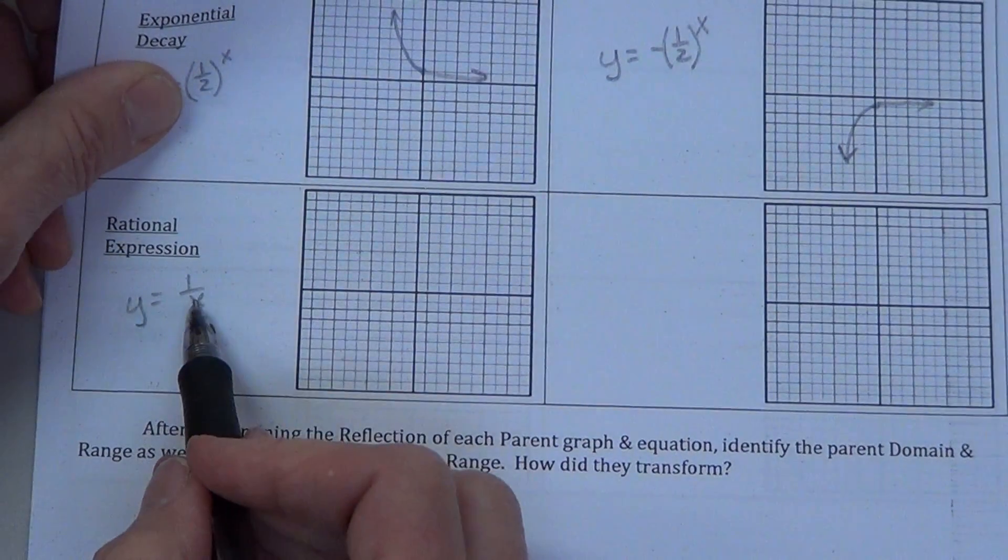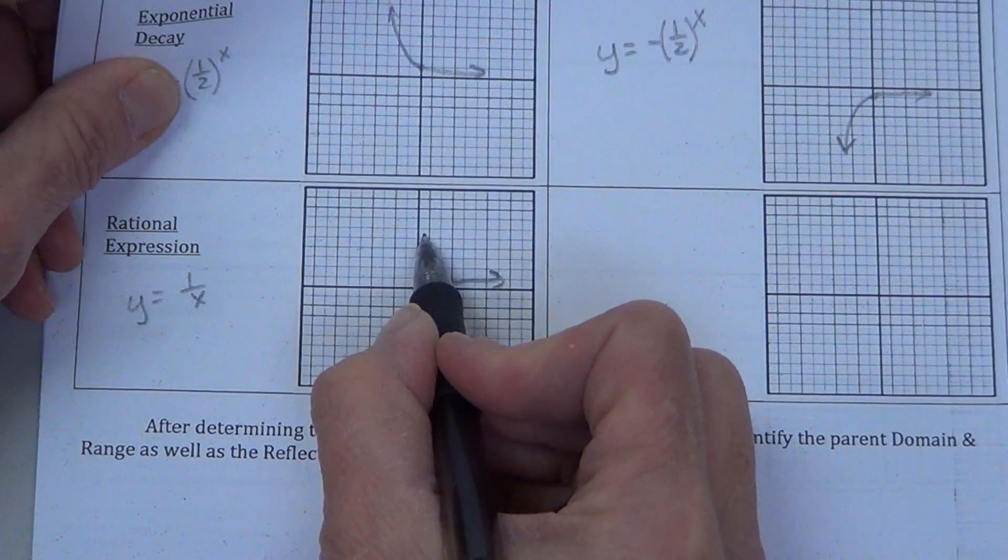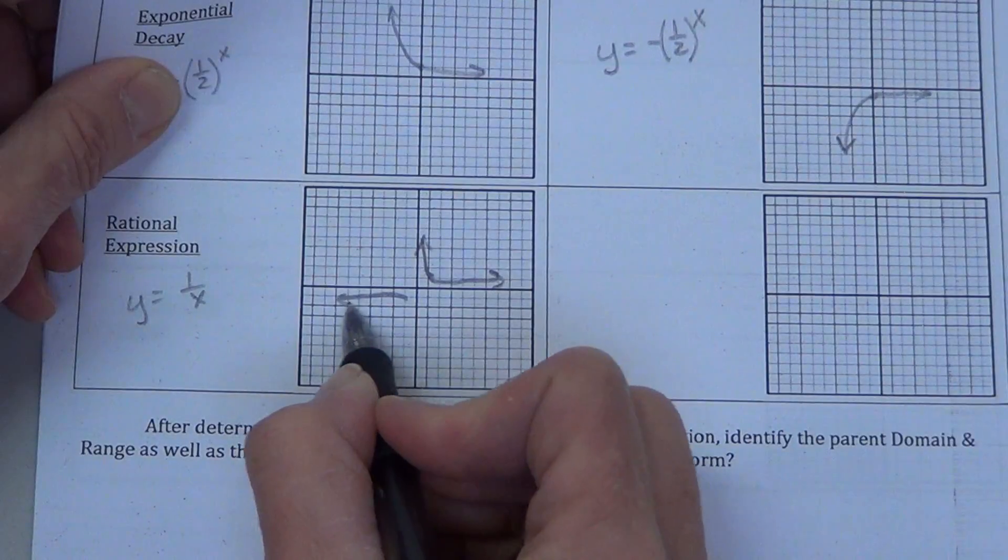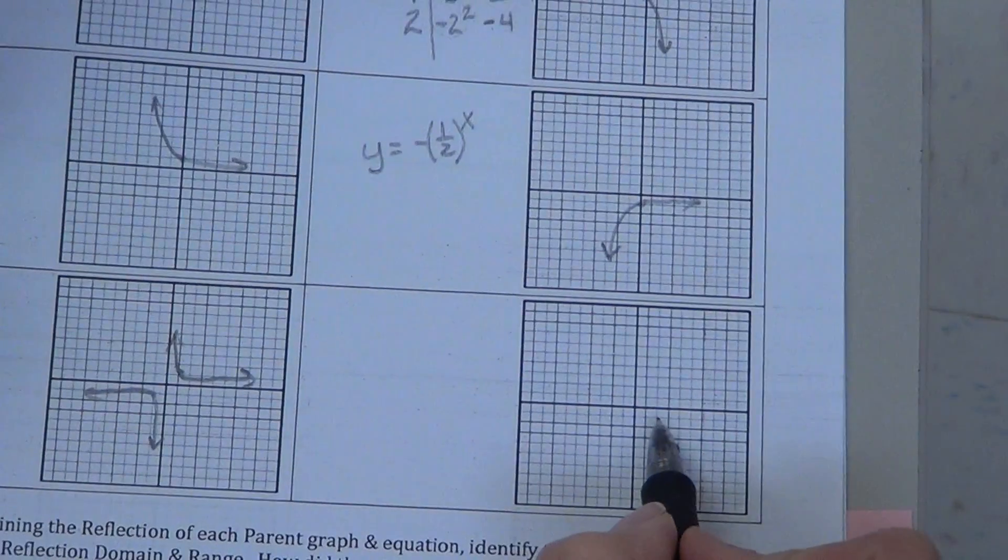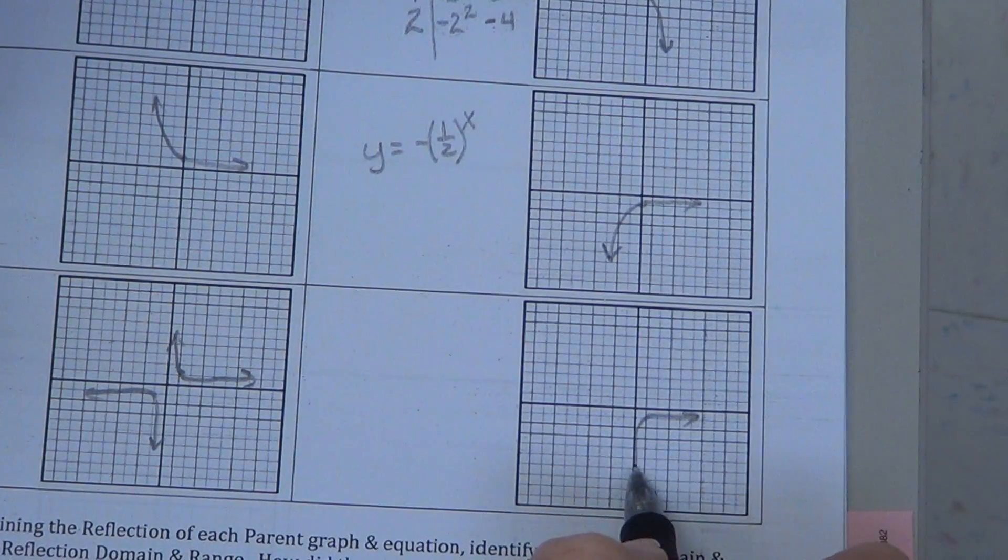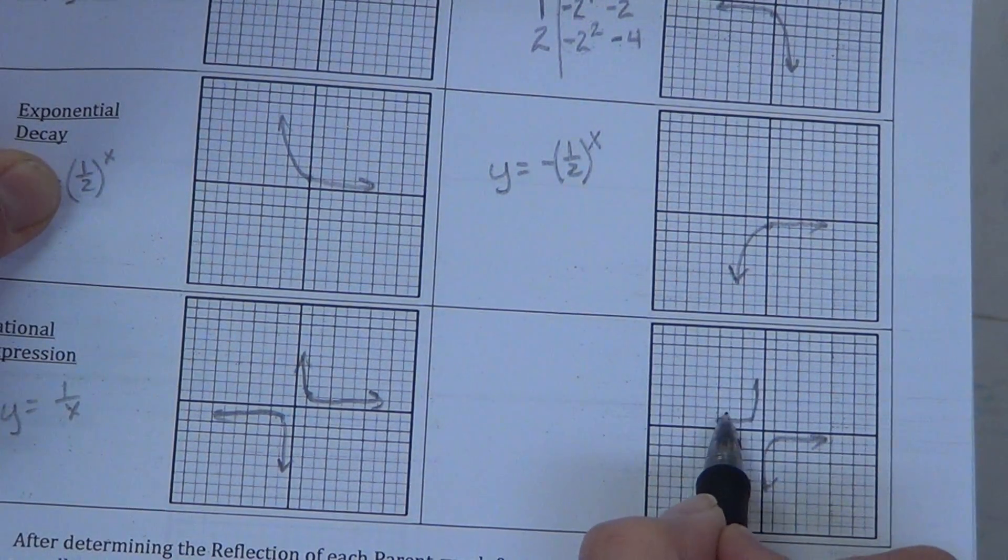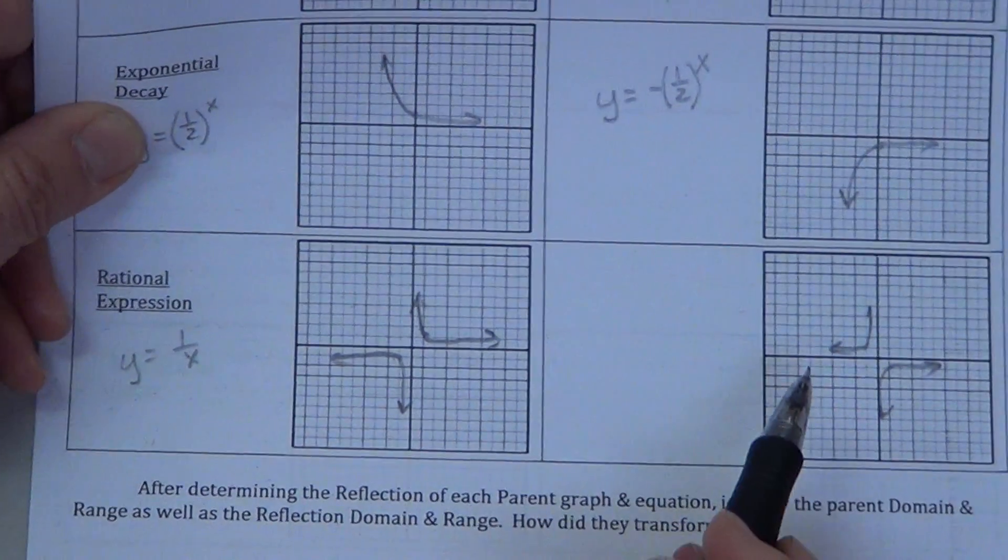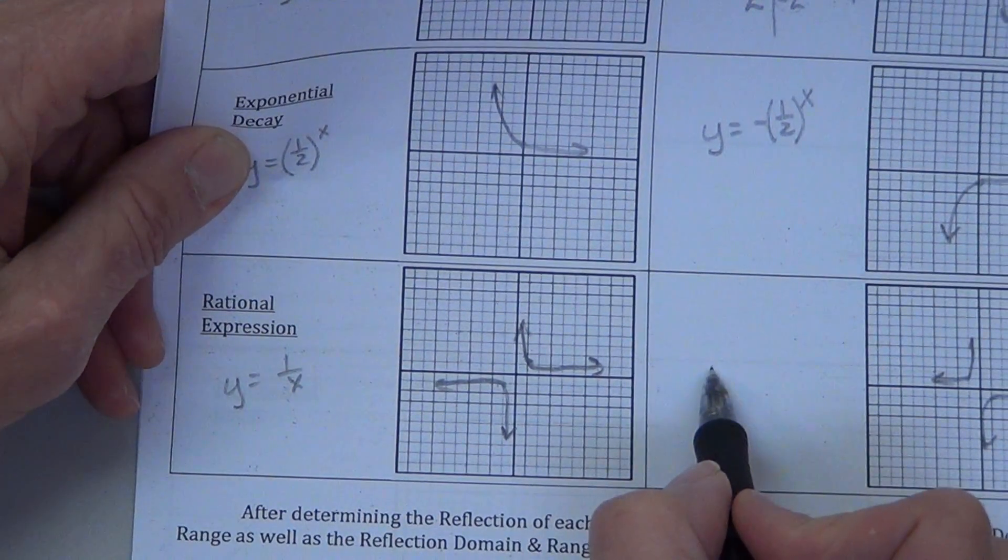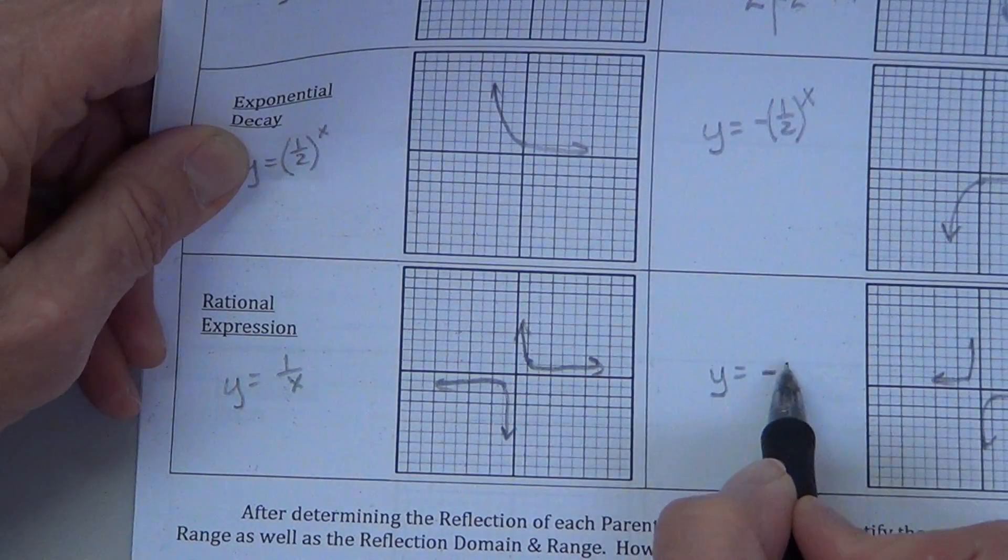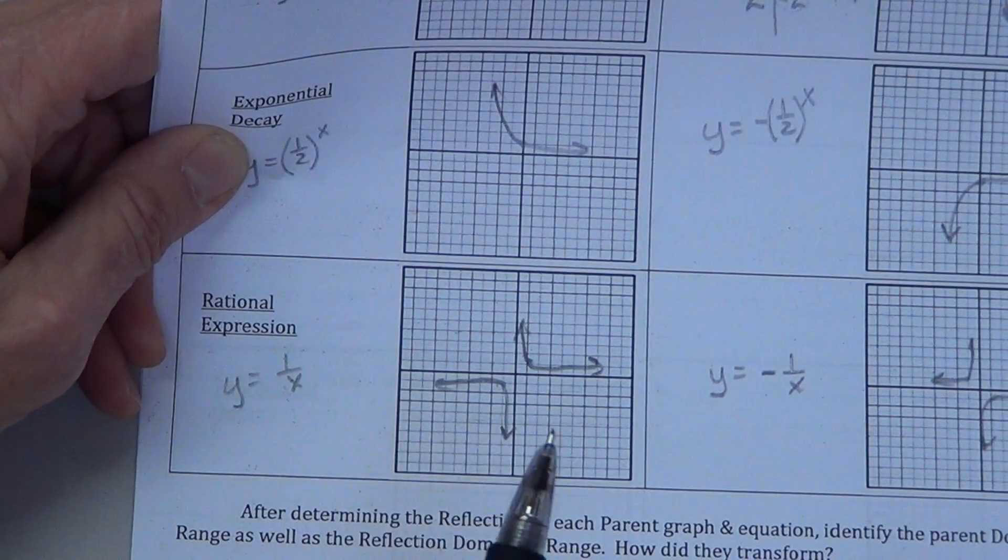This one. Remember, these were our wings. And they were located right here. Right here. And now to reflect that one, it would come down here. And to reflect this one, it would go up here because you're reflecting across the x-axis. And in order to make that happen, we have to change this parent function to reading y equals negative 1 over x.